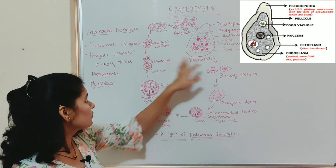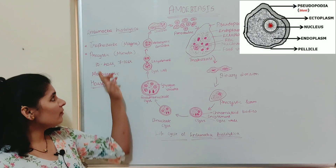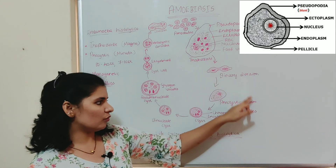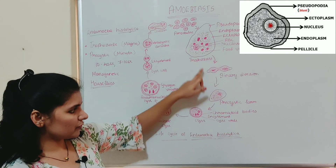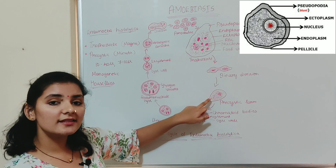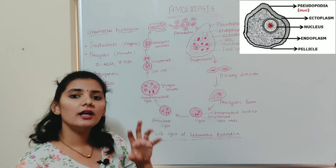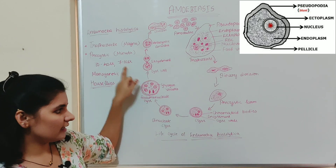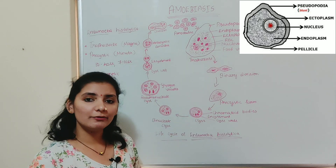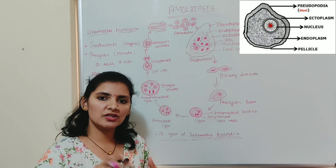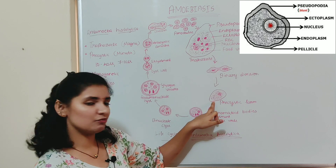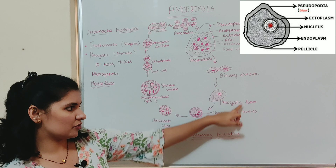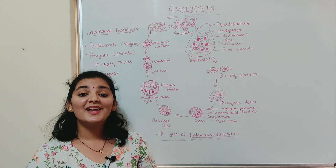The food vacuoles consist of ingested bacteria, tissue fragments, leukocytes, etc. That covers the structure of the trophozoite, also called the magna form. The second form is the precystic form, also called the minuta form. In contrast to the trophozoite, the precystic form is small, spherical, non-motile, and non-feeding. It measures about 7 to 10 microns in size. It is this form by which infection spreads from one person to another.